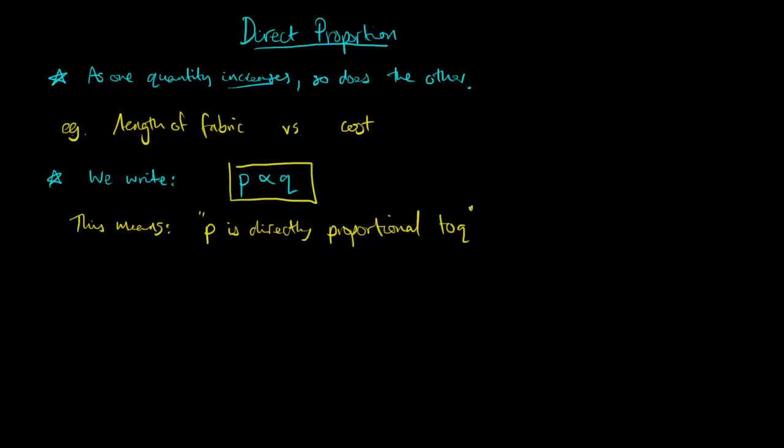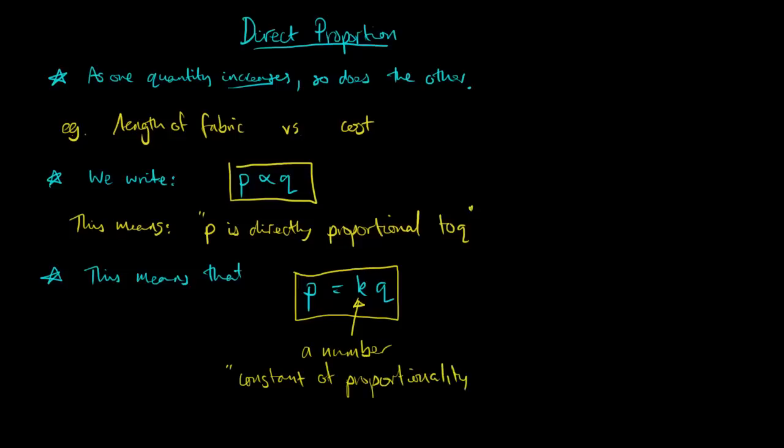Next, what does that actually mean mathematically? What can you write down and what we can use? Well, we write down that P is equal to K times Q. And K is just a number. And for length of fabric example, it'll be different from other examples. It depends on what the situation is. But we call this number the constant of proportionality, and finding this number is the key to answering questions on direct proportion.